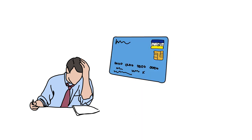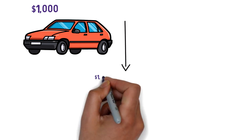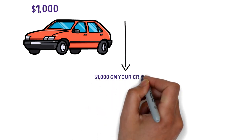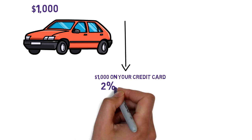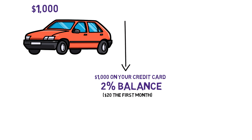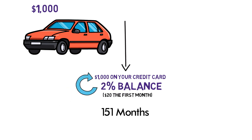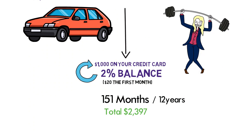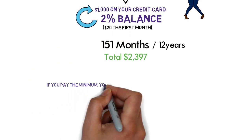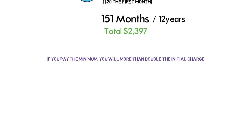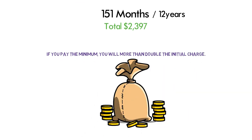If you pay $1,000 to repair your car but don't pay the bill right away, this is how much you'll owe the credit card company. If you charge $1,000 on your credit card and pay 2% of the remaining balance, $20 the first month, it will take you 151 months to repay the $1,000. Charges will total $2,397 at the end of 151 months or over 12 years for an additional $1,397 in interest charges on top of the original $1,000. If you pay the minimum, you will more than double the initial charge. Join Warren Buffett in stockpiling cash for the unexpected.